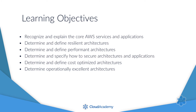At the end of this learning path, you'll be able to recognise and explain the core AWS services and applications, determine and define resilient architectures, determine and define performant architectures, determine and specify how to secure architectures and applications, and determine and define cost efficient, operationally efficient architectures.